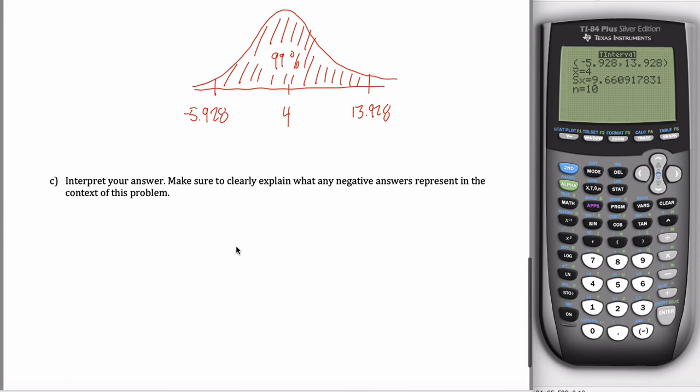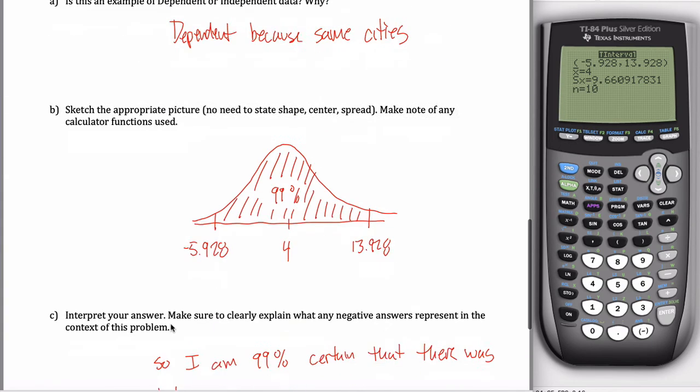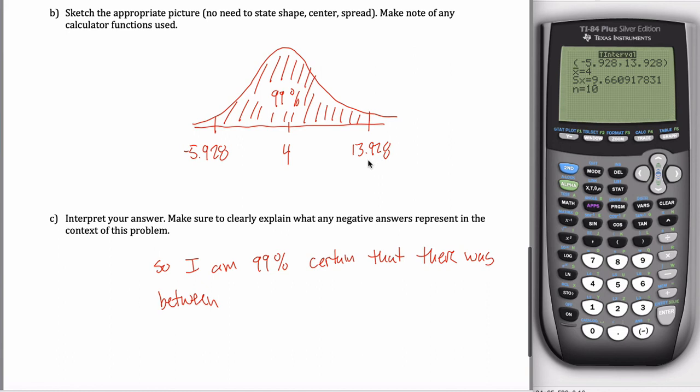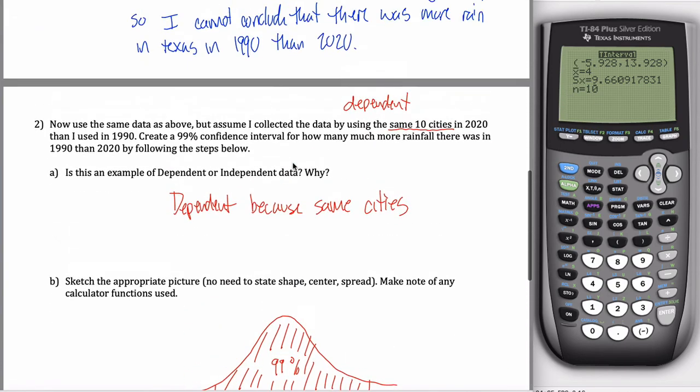And then interpret your answer. Make clear what negative numbers mean, essentially. So I would say I am 99% sure or confident or certain that there was between, and this negative 5.928 refers to less rainfall in 1990 than 2020. And this 13.928 refers to more rainfall in 1990 than 2020. So there was between 5.928 less, I think these are inches, and 13.928 more inches of rainfall in Texas in 1990 than 2020. And I believe that's the last thing it asked for. So I suppose that would end this quiz.